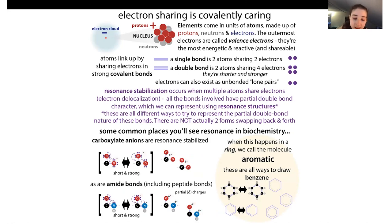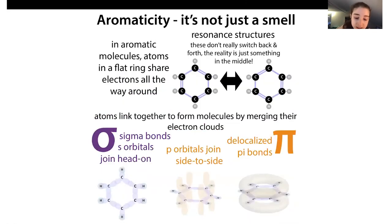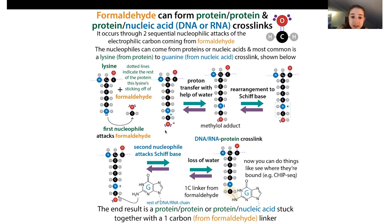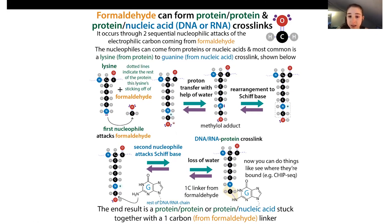Lysine can more readily attack formaldehyde. Once you have that first attack, you get an intermediate that is more electrophilic, and then you don't need as strong a nucleophile for the second attack - so you can get lysine acting first and then DNA acting second. When the first nucleophile attacks that electrophilic carbon, the electrons get pushed onto the oxygen. You end up with this weird separation of charges, so you get a proton transfer - water helps with these types of reactions, passing the proton - and you end up with a methylol adduct.